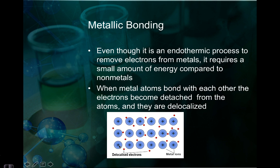Now technically, because the electrons are moving around, they're no longer necessarily attached to it. So technically, the atoms are ions. They are positively charged because the electrons are not necessarily attached to them anymore. So they are delocalized, and a lot of the properties that we have with metals are due to those delocalized electrons.